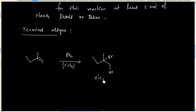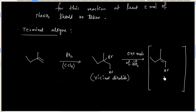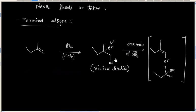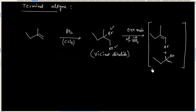So this is vicinal dihalide. Now if I use one mole of base, there are two possible products. So either I can remove this bromine or I can remove this bromine. Basically, these two products are not isolable.